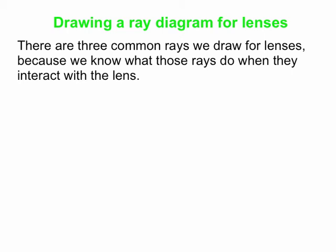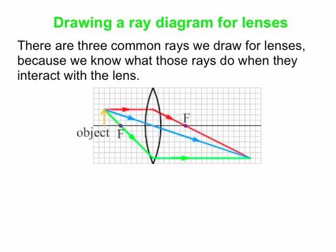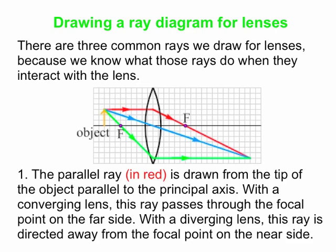Let's go over the basics of drawing a ray diagram for a lens. Any ray will work, but we generally stick with three common rays because we know what they'll do when they interact with the lens. Here's our basic ray diagram with a double convex lens and three basic rays. The first is the parallel ray: drawn from the tip of the object, going parallel to the principal axis. The lens converges it through the focal point on the far side. If it were a diverging lens, the ray would diverge away from the focal point on the left-hand side.